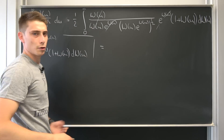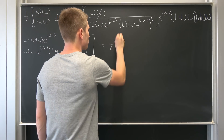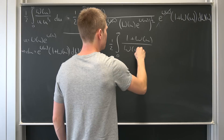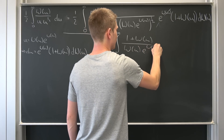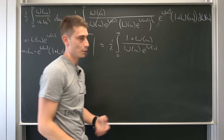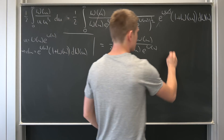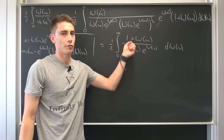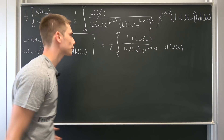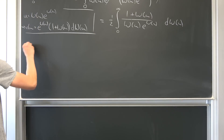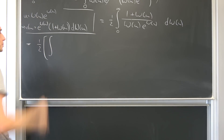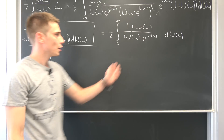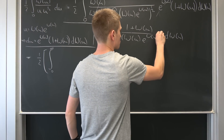The u terms and Lambda W cancel out, and we end up with a nice expression: one half times the integral from 0 to infinity of (1 + Lambert W) over (Lambert W) times e to the Lambert W, d(Lambert W). We have an addition in the numerator, so we can break this into two integrals. The first part has Lambert W to the negative 1/2 power — and I forgot the square root, terribly sorry.